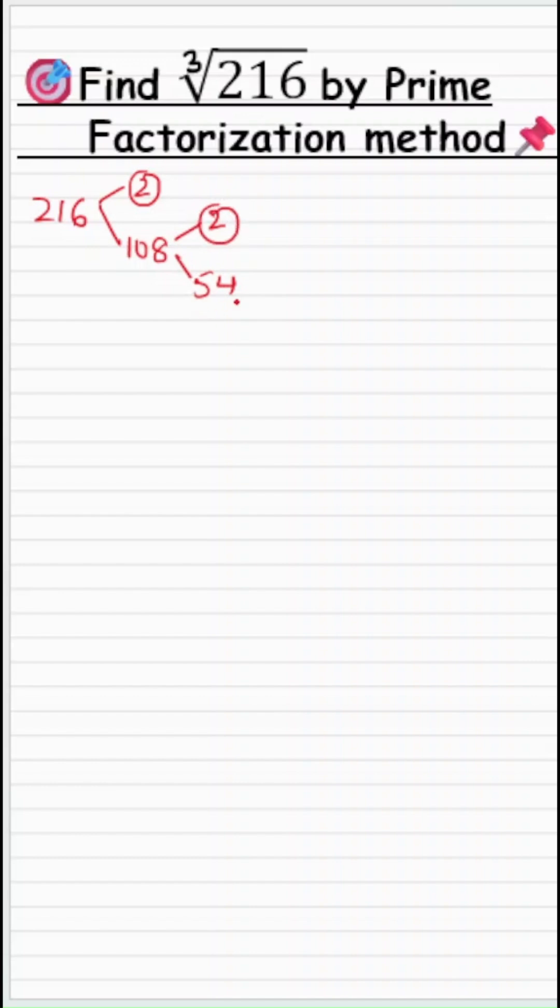Again 2 is prime but 54 is not. Let's split 54. So 54 is 2 times 27.